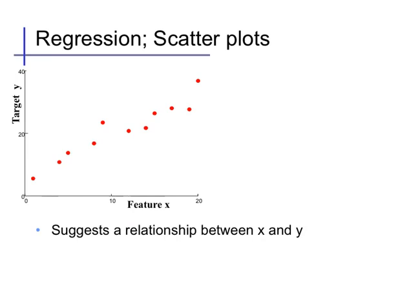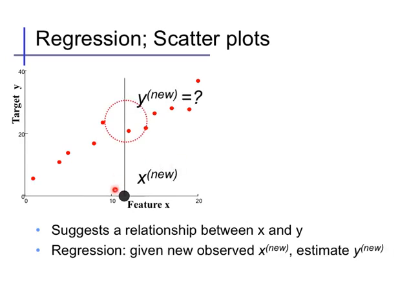Let's start with a regression problem. In regression, for the purposes of plotting, we'll assume that we just have a single scalar feature x and the target y, and therefore we can plot each of our observed data points as a point with an x, y coordinate. When we look at this scatter plot, it suggests some relationship between x and y that we can use, so that given a new x point that we're asked to predict at, this relationship will suggest what value we should predict the y value for that feature x at.